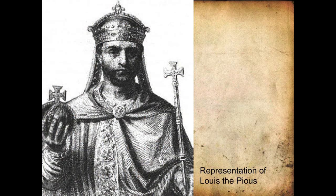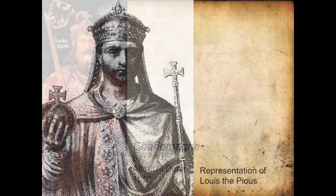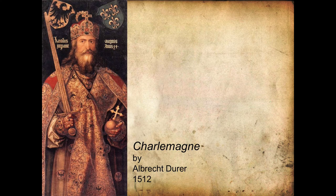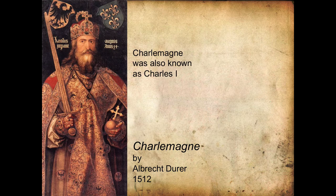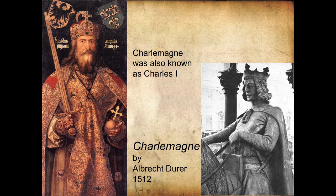Just for reference, here's a representation of Louis the Pious, Charlemagne's son. Here's a depiction of Charlemagne done by Albrecht Dürer in 1512 — nowhere near the actual time of Charlemagne. Charlemagne was also known as Charles the First or Charles the Great. And here's a sculpture that is supposed to represent Otto the First — pretty good hair.